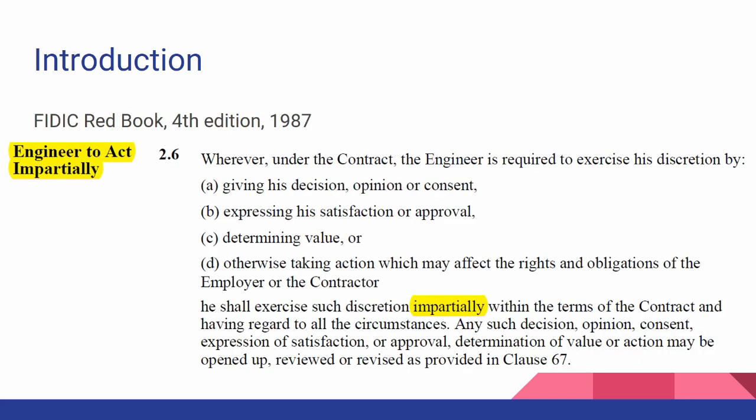In the 1987 edition, clause 2.6 obligates the engineer to act impartially. This clause is in the construction contract between the contractor and the employer, and the contractor is fully aware that the engineer has an obligation to act impartially. In practice, however, this created a conflict because the engineer is paid by the employer and yet is taking on an impartial role, almost like a judge.